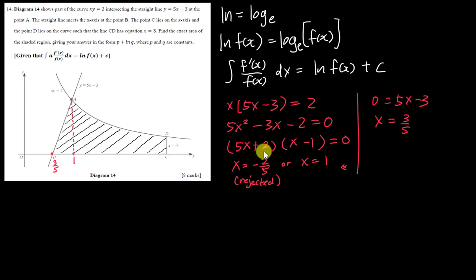Right now I want to find the area of the triangle. The triangle is basically half times base times height. This is a right angle triangle - this one is 1 minus 3 over 5, you should get 2 over 5. For the height, I need to find the y coordinate. I sub into this equation: when x = 1, y equals to 2. So this coordinate is (1, 2), so the height will be 2.